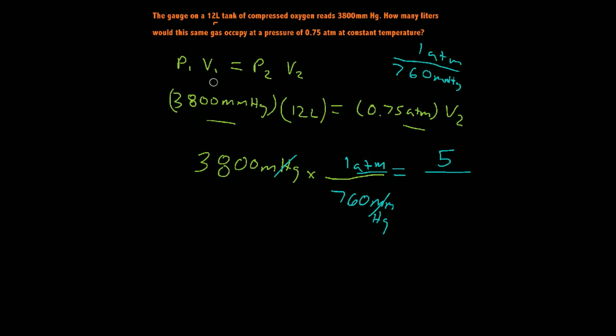All right? So we can replace this, I'll just put it in parentheses up here, 5 ATM. So 3,800 millimeters of mercury really equals 5 ATM.